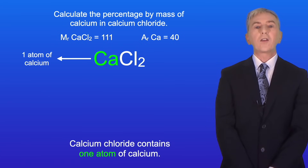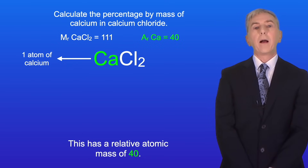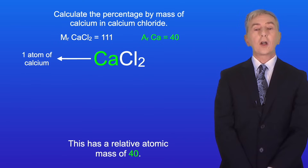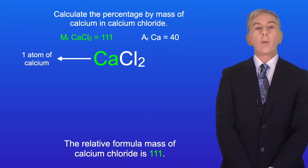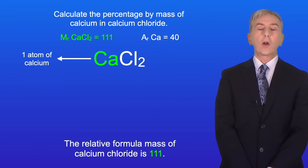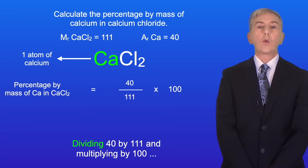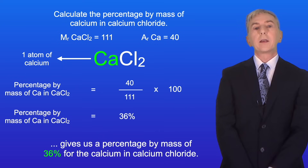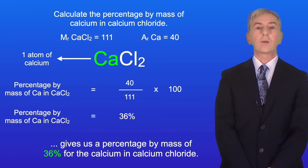Calcium chloride contains one atom of calcium and this has a relative atomic mass of 40. The relative formula mass of calcium chloride is 111. Dividing 40 by 111 and multiplying by 100 gives us a percentage by mass of 36% for the calcium in calcium chloride.